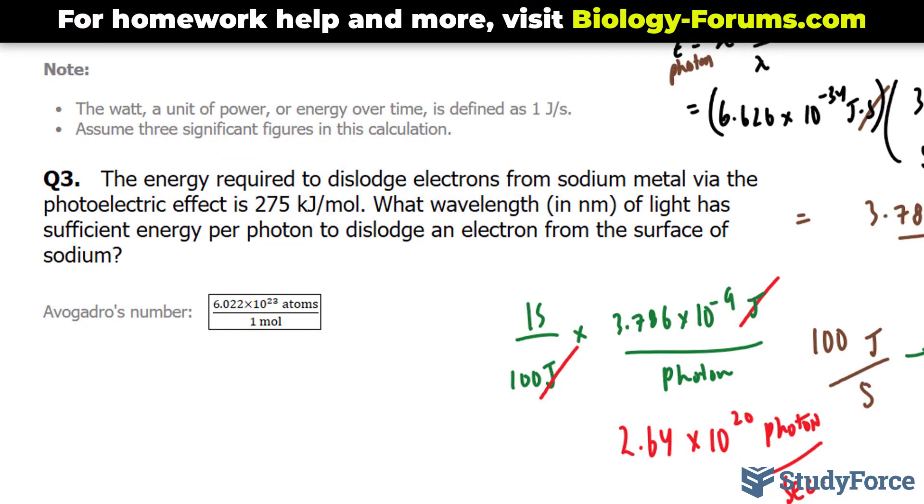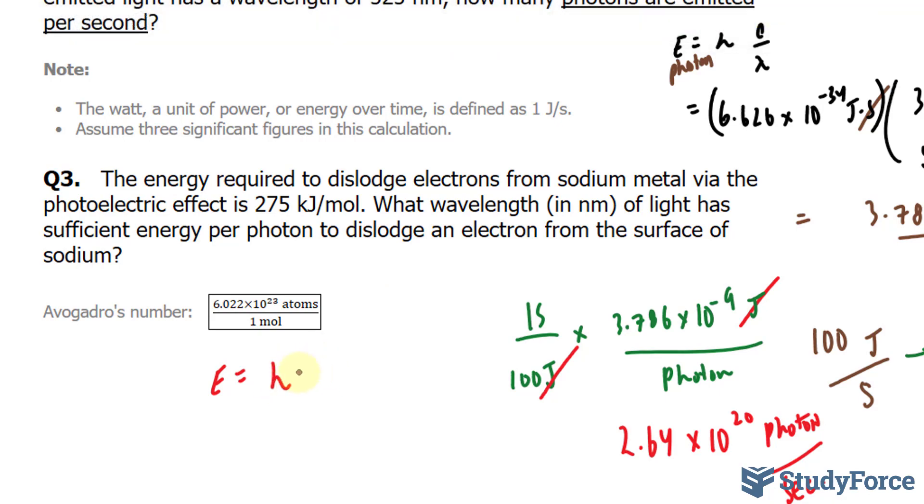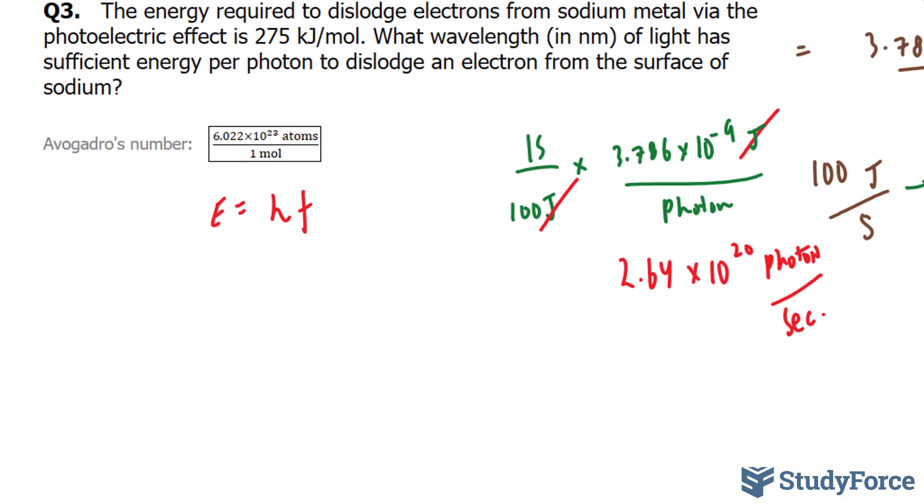Let's start by writing out what we know. We know that there's a relationship between energy, Planck's constant, and the frequency, where the frequency can further be broken down into the speed of light per wavelength, represented by lambda.